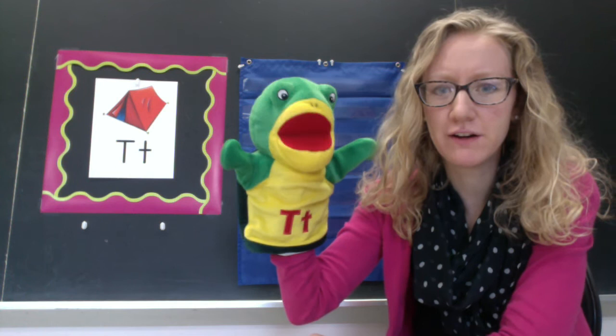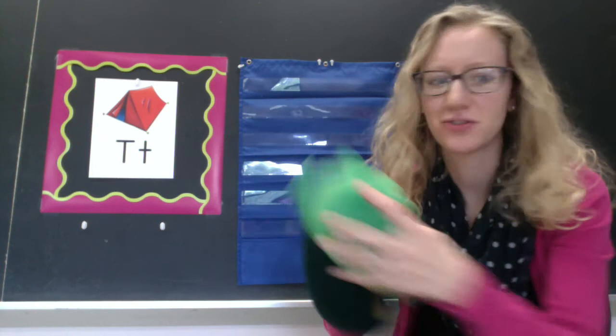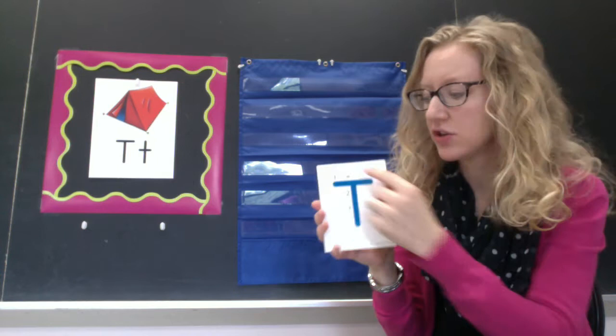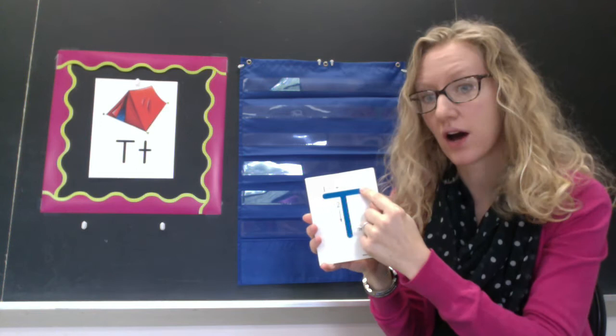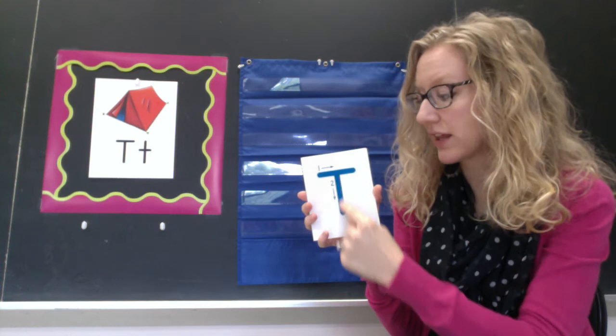Thank you, Mr. Turtle. To make a capital T, you're going to start at the top. You make a straight line down all the way to the bottom, and then across on the top. It goes along the top line, so watch one more time. You start at the top, straight line down, cross on the top.